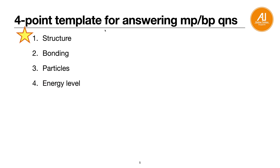Sometimes a question will ask why a compound has a high melting point or low boiling point. You answer it using a 4-point template. The first point, you talk about the structure. Second point, the bonding. Third point, the particles. Fourth point, the energy level required. Memorize this — it will ensure your answer in the exam will be complete.